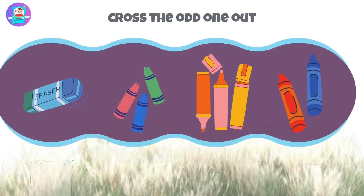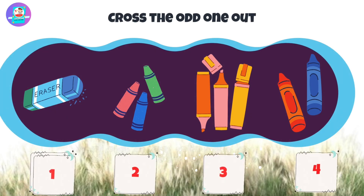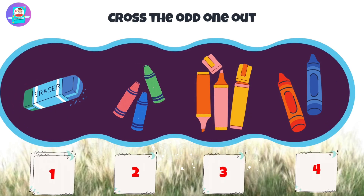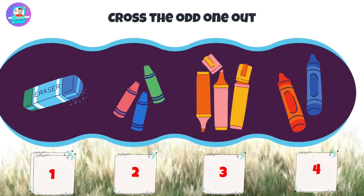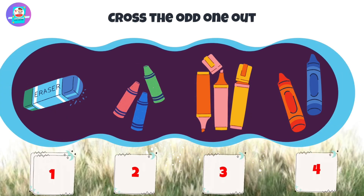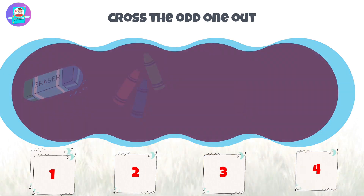Okay, next, there are 4 pictures: 1, 2, 3, 4. Put the odd one out.